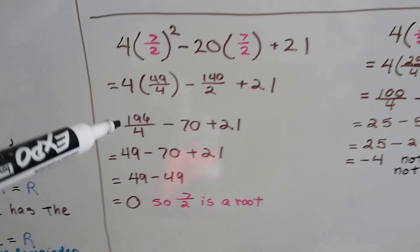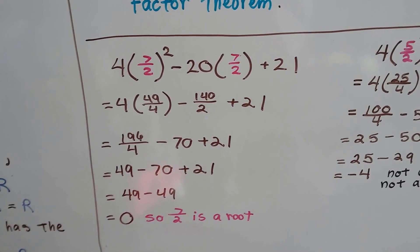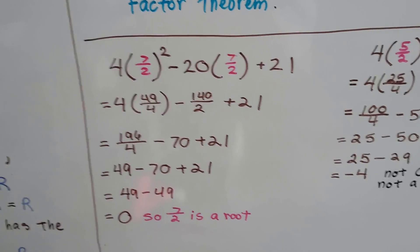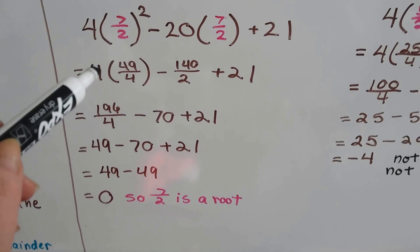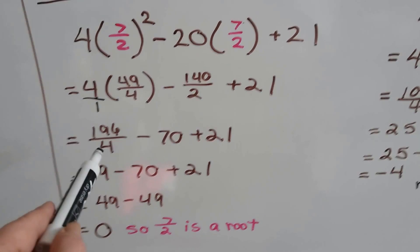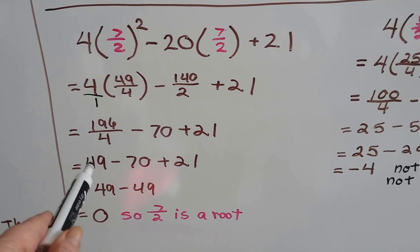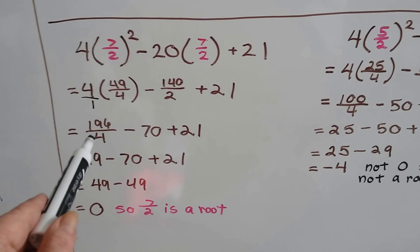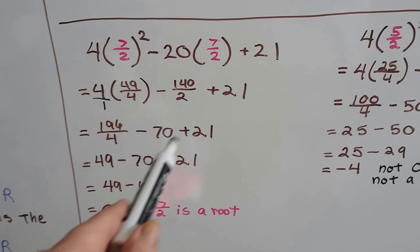So let's do the 7 halves first into this polynomial. So by plugging 7 halves in, this is what we get. And we have to square this first so we get 49 over 4. Then we get minus 20 times 7 halves plus 21. We're going to multiply this guy by the 4. And actually we can cancel out. I did it the long way by doing 4 times 49, which is 196. But we can actually, if this is over a 1, we can say that this 4 cancels out that 4 and we end up with 49 over 1, which is 49.